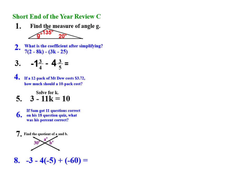This is short end-of-the-year review C. Number 1 says find the measure of angle G. One thing that we should remember is no matter what your triangle looks like, if it's a triangle, the sum of the interior angles, these three angles added up together, will equal 180 degrees.